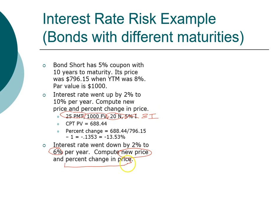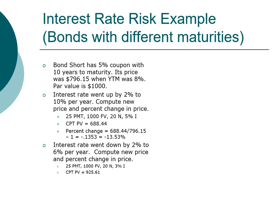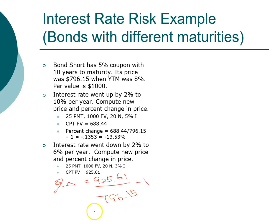When you compute the price of the bond, the new price goes up — it went up from $796 to $925.61. The percentage change in price equals the new price divided by the old price minus 1: $925.61 divided by $796.15, minus 1, equals 16.26%. So this short-term bond's price increased by 16.26% when interest rate fell by 2%.